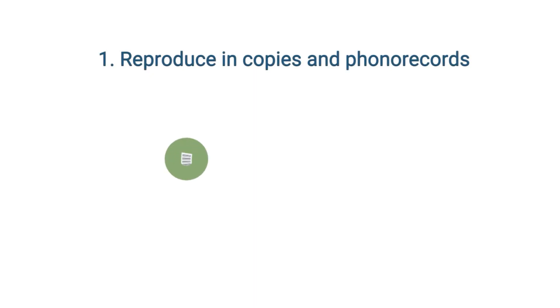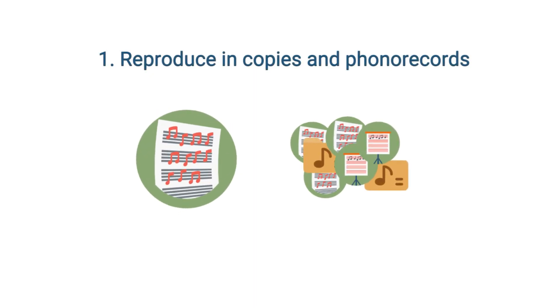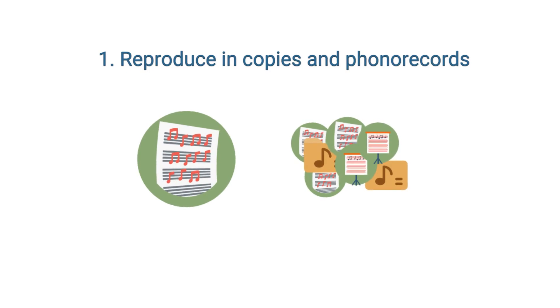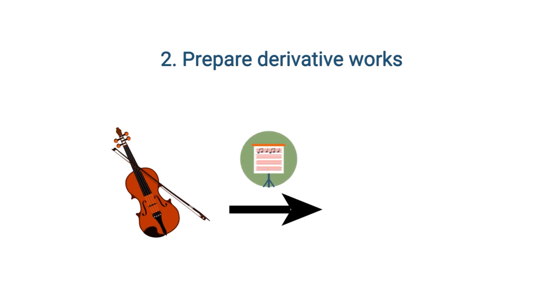Number one: to reproduce the copyrighted work in copies or phono records. Example: reproduction of a work in the form of sheet music or lyric sheets. Number two: to prepare derivative works based upon the copyrighted work. Example: a conductor transcribing a piece from cello to piano.